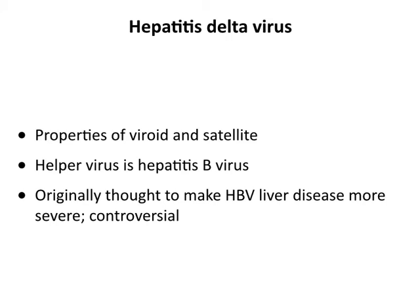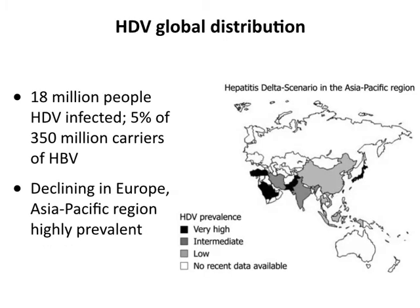There is one satellite that infects humans — hepatitis delta virus. It is classified as a satellite because it needs a helper to replicate; its helper is hepatitis B virus. It is never found by itself — you need hepatitis B infection to have hepatitis delta. When first discovered it was thought to make hepatitis B more severe, but this has turned out to be controversial and largely not believed anymore. About 18 million people are infected with hepatitis delta, representing about 5% of the 350 million infected with hepatitis B. Prevalence is going down in Europe but remains high in some Asia-Pacific regions.